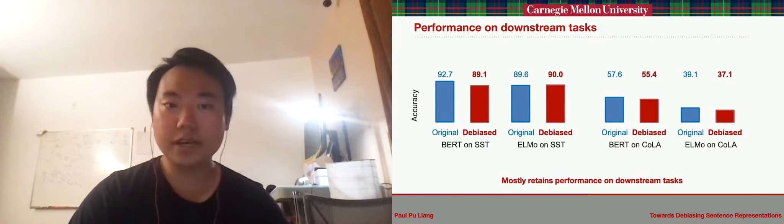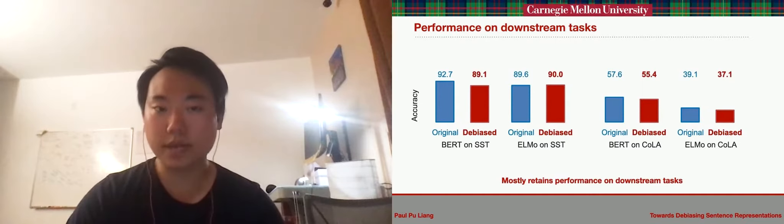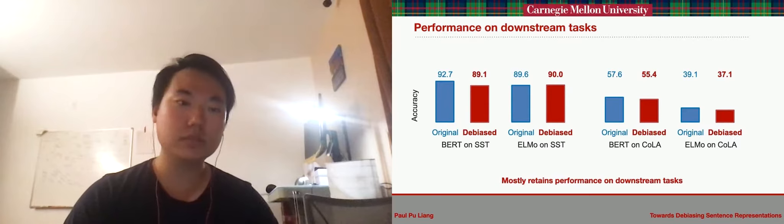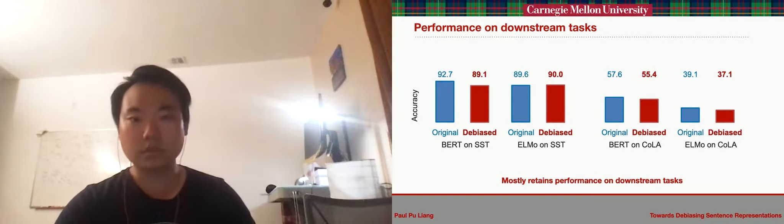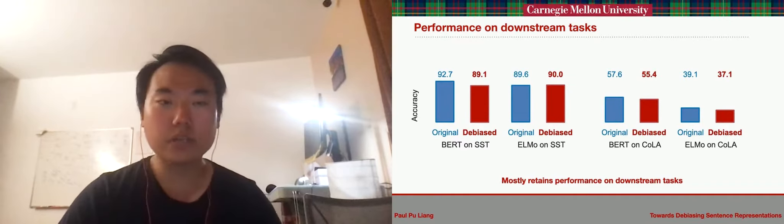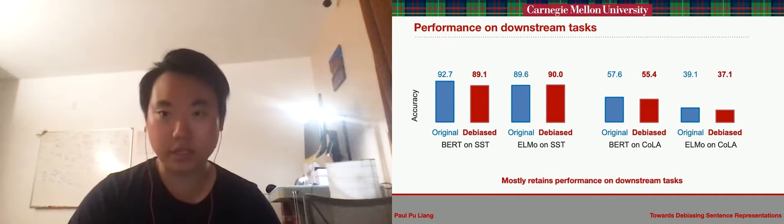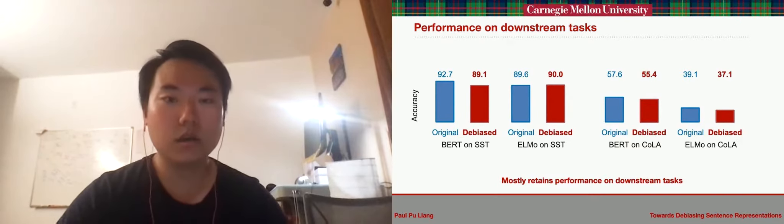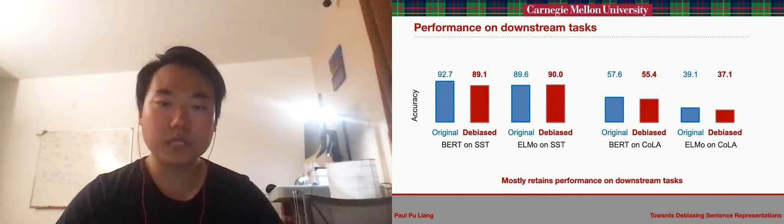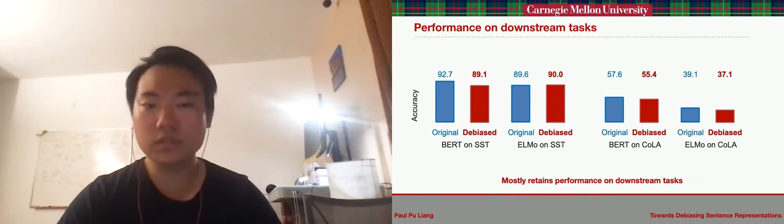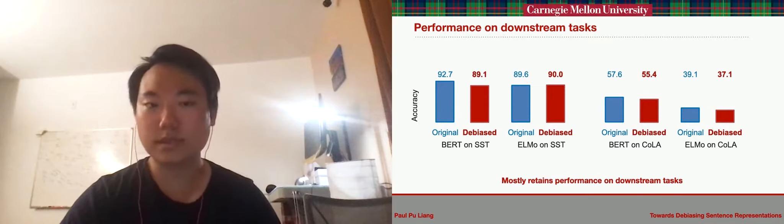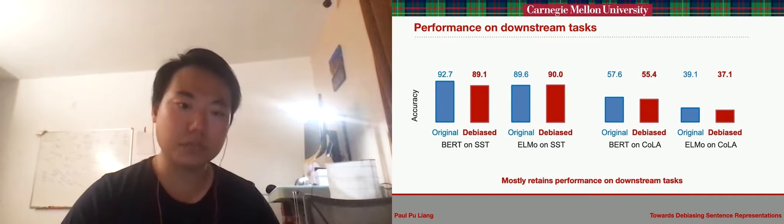To ensure that debiasing does not hurt the performance on downstream tasks, we also report the performance of our debiased BERT and ELMO methods on SST and CoLA by training a linear classifier on top of these debiased BERT and ELMO sentence representations. We observe that the downstream task performance does show a small decrease ranging from 1% to 3% after the debiasing process, which we believe is reasonable.